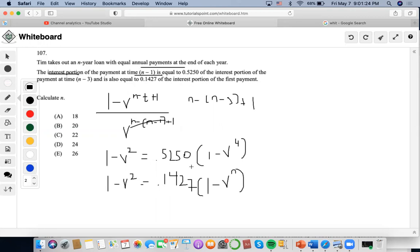Now let's calculate n. So I could expand this quadratic to 1 minus v squared times 1 plus v squared. And I could get rid of this and this. So this would become 1.